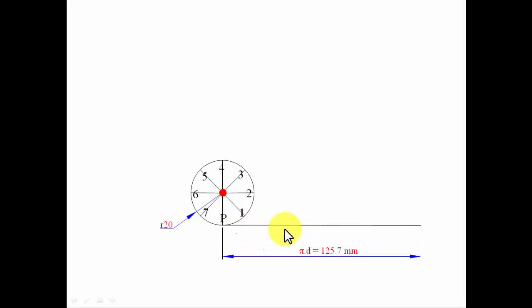For that, I'll be drawing a line from point P at any suitable angle and of any suitable length. I'll be placing arcs of one centimeter radii—eight arcs for eight divisions. This point has to be joined with the end of this line.